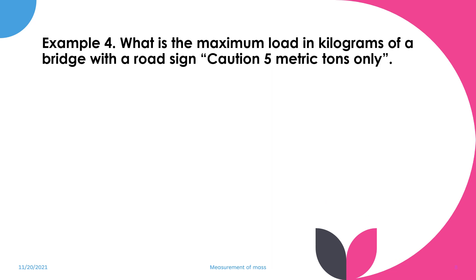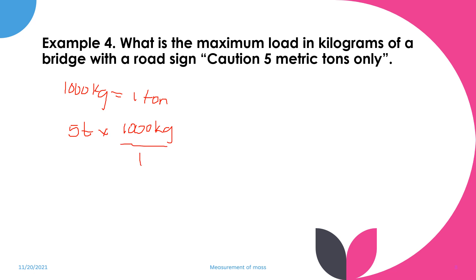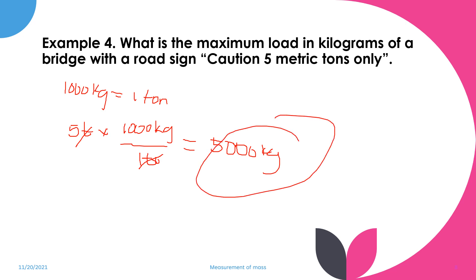Example 4: What is the maximum load in kilograms of a bridge with a road sign that reads 'Caution: 5 metric tons only'? We know that 1,000 kilograms equals 1 metric ton. So 5 metric tons times 1,000 kilograms over 1 ton — the ton units cancel — gives us 5,000 kilograms. That means the capacity of that bridge is only 5,000 kilograms.